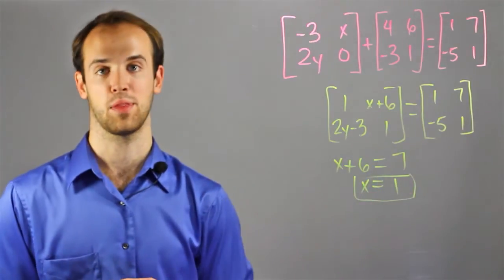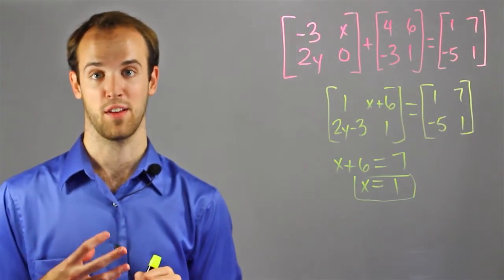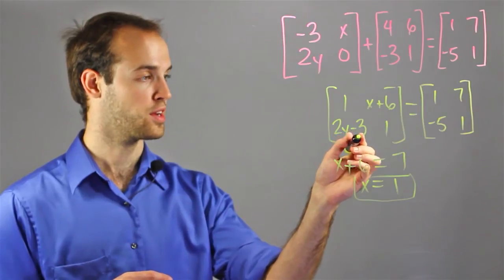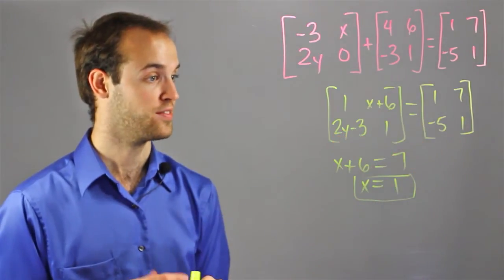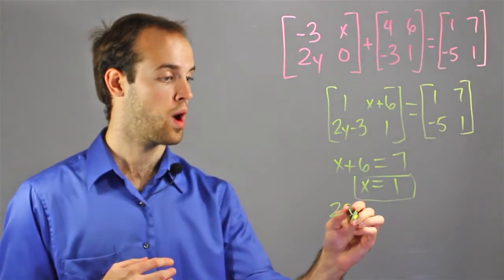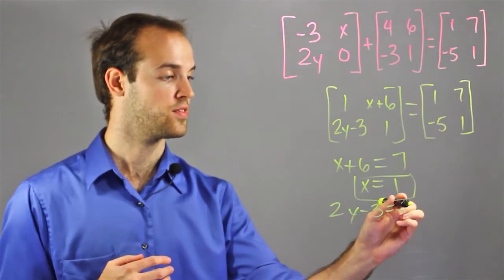And I want to do the same thing for y, I want to look for its corresponding value. I've got 2y minus 3 over here, and I know that corresponds with negative 5. So, 2y minus 3 equals negative 5.